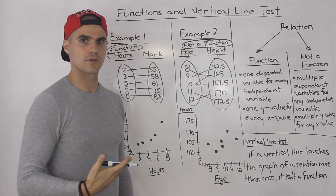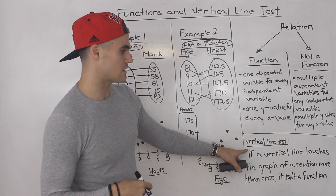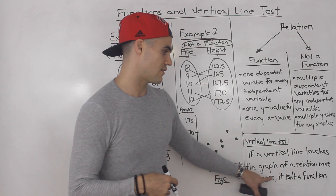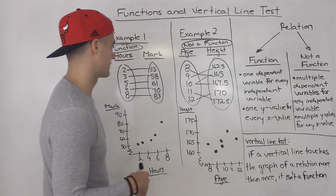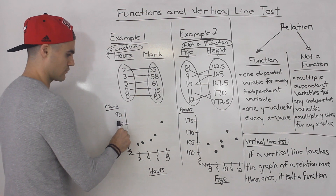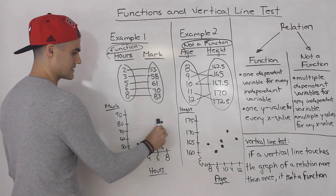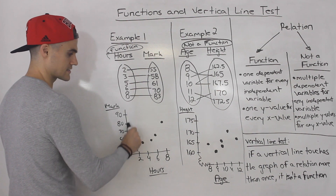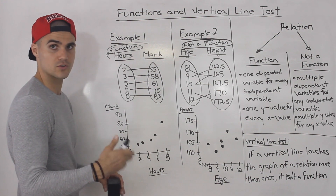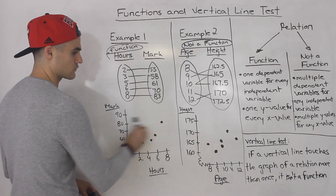The final way you can test whether a relation is a function or not is with something called the vertical line test. The vertical line test says: if a vertical line touches the graph of a relation more than once, then the relation is not a function. You take a vertical line and run it through the graph. If we run it through example one's graph, notice that the vertical line is not touching the relation twice at any point. That means each independent variable has only one corresponding dependent variable, so it is a function — it passes the vertical line test.